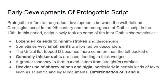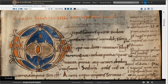Other Proto-Gothic characteristics include very small serifs forming on descenders, the flat-topped D becoming more common than the straight-backed counterpart, and generally thicker quills being used — that's probably the most obvious feature on the page. There is a greater tendency to form curved letters from straighter connected strokes rather than curved pen strokes. They also make heavier use of abbreviations and sigla especially in scientific and legal documents, and they start to differentiate U and V more consistently.